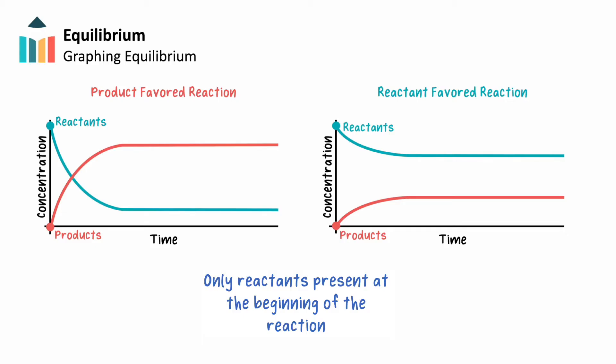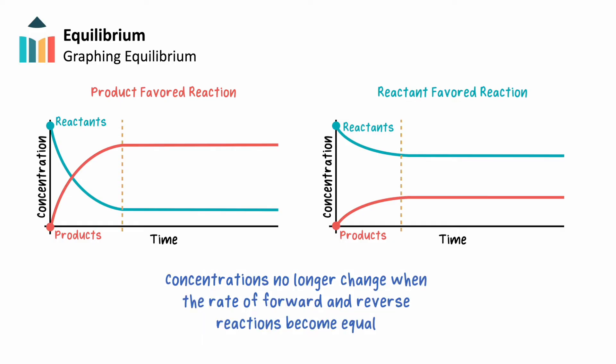At some point in either situation, the forward and reverse reaction rates become equal, which we see when the concentration of reactants and products becomes constant. This acts as an indicator that equilibrium has been established.